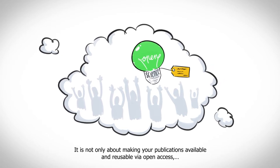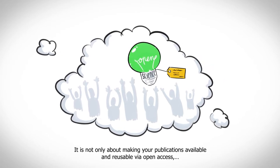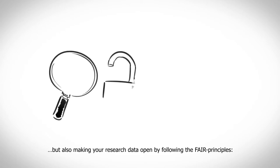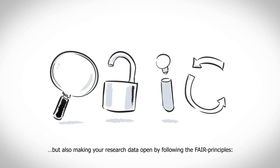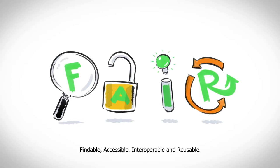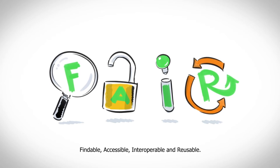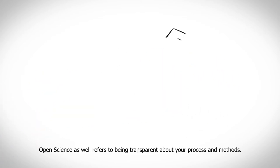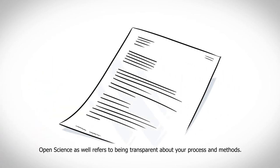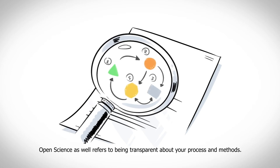Open science is not only about making your publications available and reusable via open access, but also making your research data open by following the FAIR principles: Findable, Accessible, Interoperable, and Reusable.